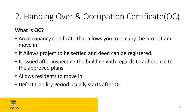The defect liability period starts after the OC. Once you achieve the occupation certificate, your defect liability period begins. For example, if you finish the job and reach practical completion but it takes six months to receive the OC, the defect liability period — which is six years for major defects — starts straight after the OC is issued, even if the building has been finished for a year prior.